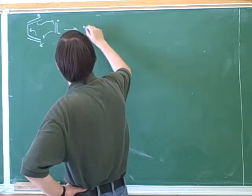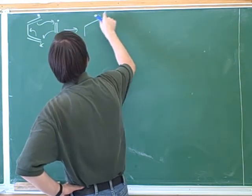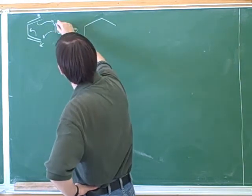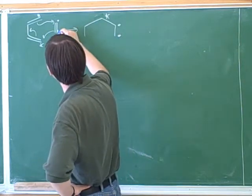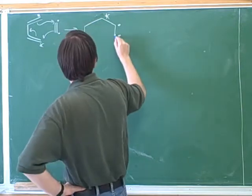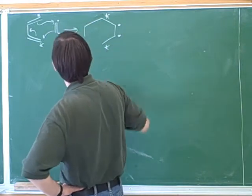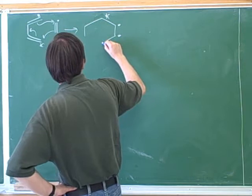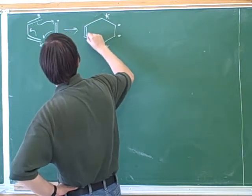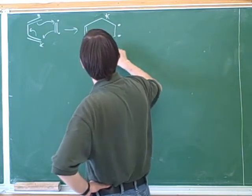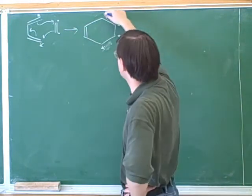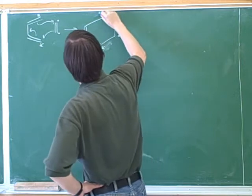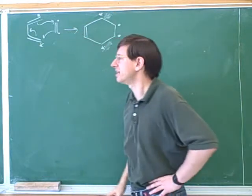So I would put dots here and stars here. This arrow means that the starred atom is making a sigma bond to the dotted atom. This pi bond is gone. Then we're making a sigma bond between the dotted atom and the starred atom. And this pi bond is gone. And there's a new pi bond over here.